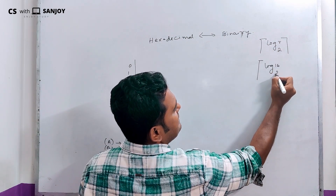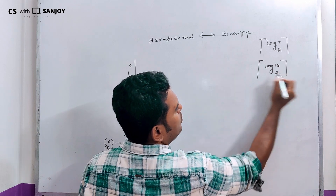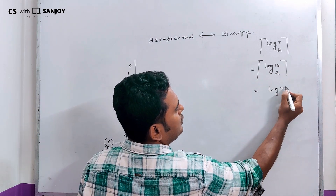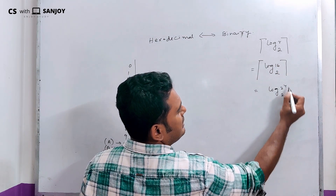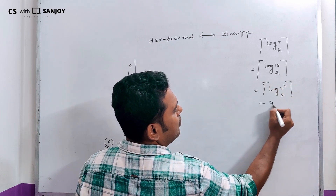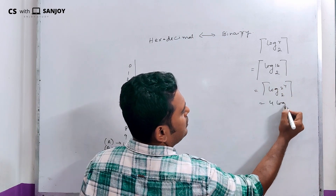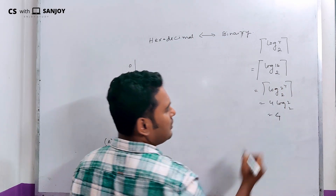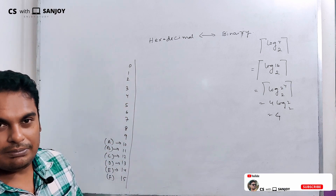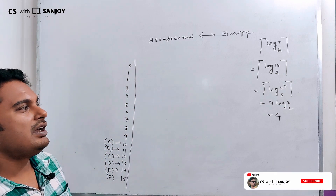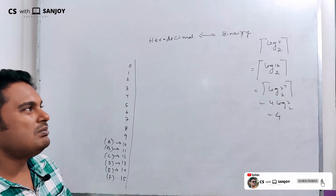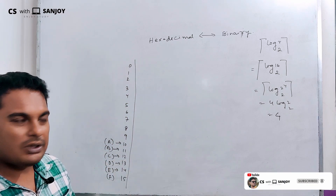That is log 16 base 2. It becomes log 2 to the power 4, base 2. So that becomes 4 log 2 base 2, which equals 4. So one hexadecimal digit requires 4 binary bits to represent it.